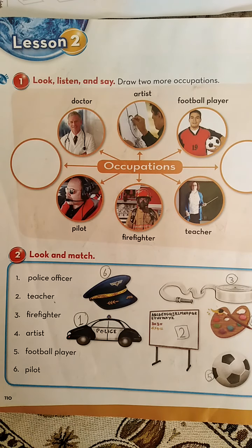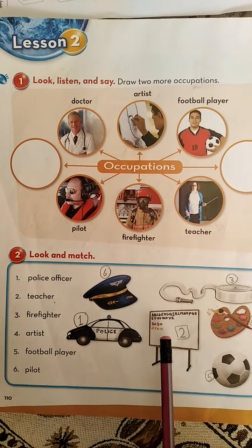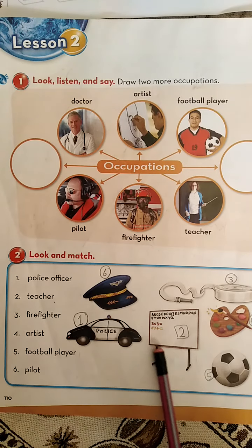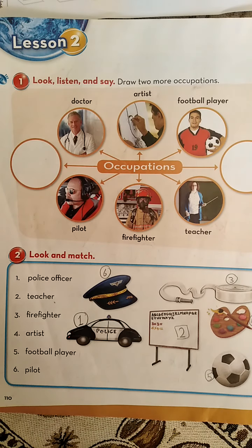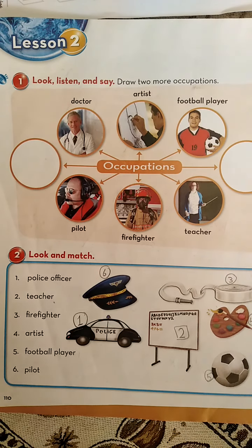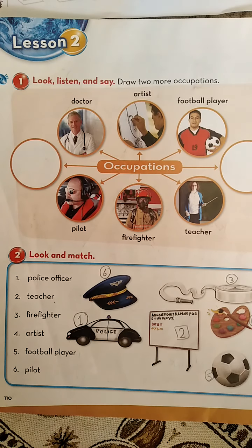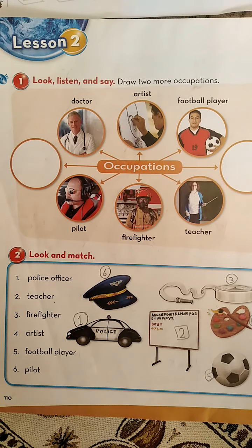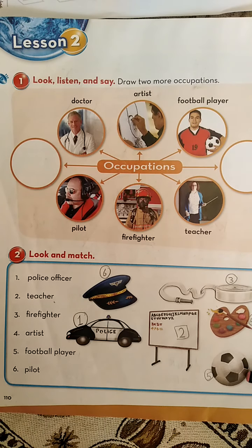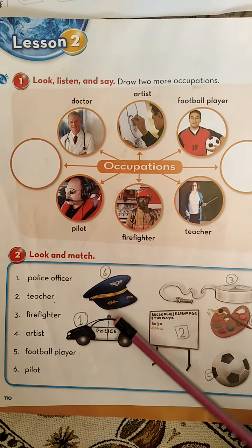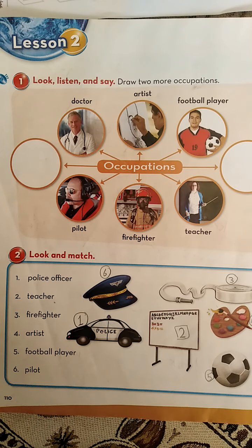Number two: We have teacher, and here we have a board for the teacher — هون عنا number two. Number three: Firefighter — رجل الإطفاء — وهون بيستخدم خرطوم المياه. Number four: Artist means فنان — وهون عنا colors — هون number four. Number five: Football player — لاعب كرة قدم — and here we have a football. And the last one: Pilot — and this is the hat for the pilot.